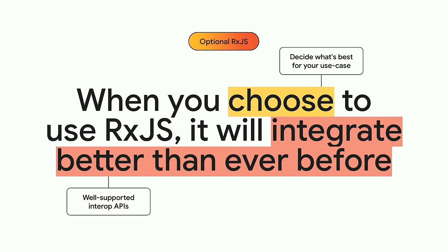While introducing the new control flow syntax, we also took the opportunity to improve our list-diffing algorithm. This allowed us to improve performance for some specific benchmarks by up to 90%, and also positioned us pretty well in the JS Framework Benchmarks. We also saw some surprising results — Vue.com reported a one-second improvement in their Largest Contentful Paint after switching to the new control flow.